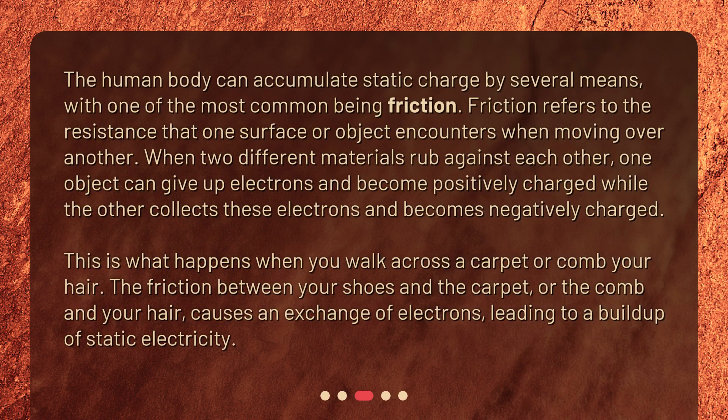The human body can accumulate static charge by several means, with one of the most common being friction. Friction refers to the resistance that one surface or object encounters when moving over another. When two different materials rub against each other, one object can give up electrons and become positively charged while the other collects these electrons and becomes negatively charged. This is what happens when you walk across a carpet or comb your hair. The friction between your shoes and the carpet, or the comb in your hair, causes an exchange of electrons, leading to a buildup of static electricity.